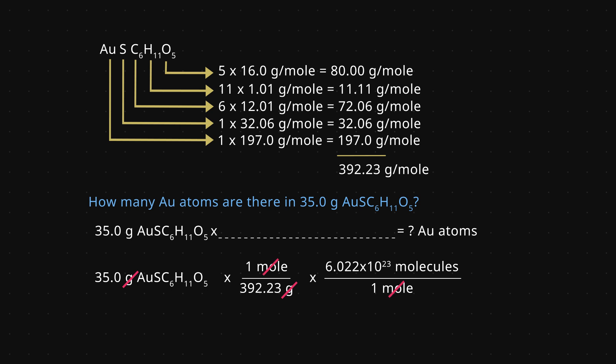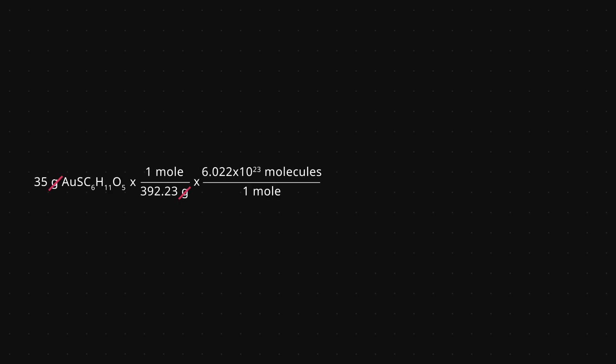From the formula for aurothioglucose, AuSC6H11O5, we can see that each molecule contains one atom of gold. We now convert the molecules of aurothioglucose to atoms of gold by multiplying by one atom of gold over one molecule of aurothioglucose. Carrying out the math gives us 5.37 times 10 to the 22nd atoms of gold.